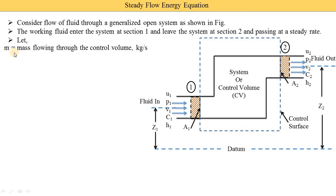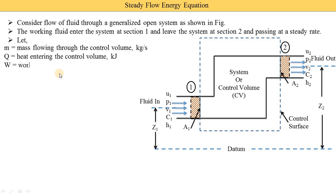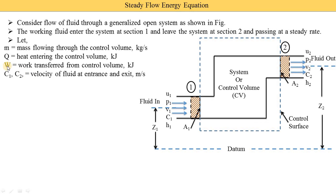The first term is M — mass flowing through the control volume — with unit kg per second. Next is capital Q, heat entering the control volume, with unit kilojoule. In this image we are not indicating Q and work interactions, as it is not necessary in every open system. For example, in a nozzle, heat and work interaction are not present, so we consider Q and W as zero.